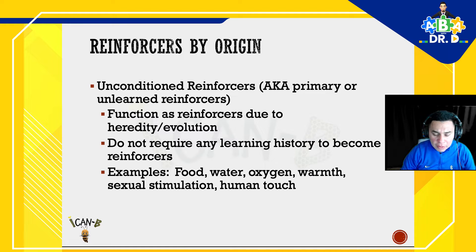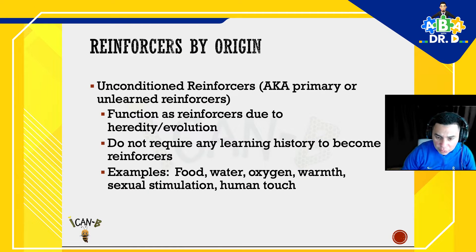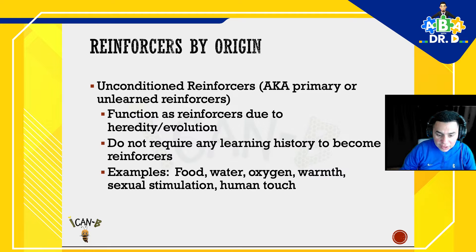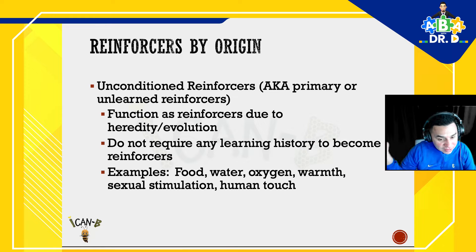Before we start talking about this particular preference assessment, let's take a little review and remind ourselves what reinforcers are. Unconditioned reinforcers — also known as primary or unlearned reinforcers — function as reinforcers due to heredity or evolution, and they do not require any learning history to become reinforcers. Some examples include food, water, oxygen, warmth, sexual stimulation, and human touch. These are things that are necessary for us to exist.